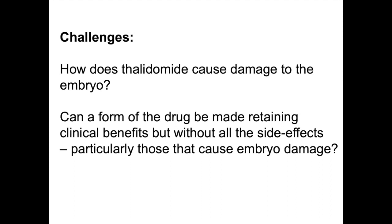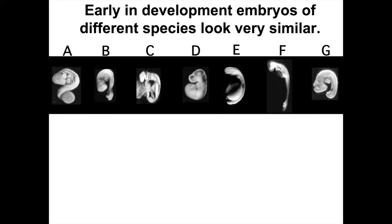So how does thalidomide cause damage to the embryo? And can a form of the drug ever be made that retains clinical benefits without the side effects? I'm going to show you some pictures of chicken embryos that we use in the lab to replicate thalidomide-induced damage in humans. I want to make the point of why we use chickens, fish, and mice in research, particularly for drug development. This is a slide showing seven vertebrate embryos — embryos with a backbone — and I'd like you to select the human one. You've got A, B, C, D, E, F, or G. Each one is a different species. I'll give you about a minute to do that.